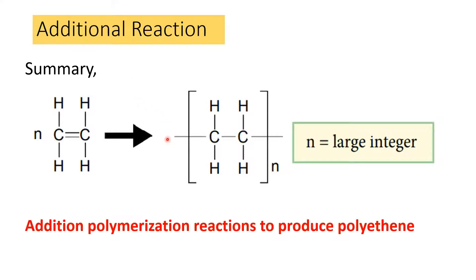This is the summary of the chemical equation for addition polymerization. The integer n represents any large number — 100, 1000, or more. So we write n monomers producing n repeat units in the polymer. This is the addition polymerization reaction to produce polyethene. Note that even though the double bond is no longer present in the product, the name remains polyethene — the name does not change.